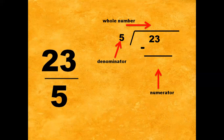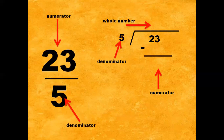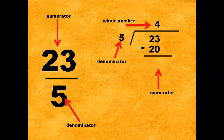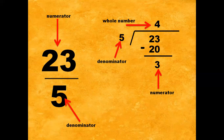Second example: 23 fifths. The numerator is 23 and the denominator is 5. Step 1: 23 divided by 5 gives us 4. 4 times 5 gives us 20. 23 minus 20 gives us 3. So the whole number is 4, the denominator is 5, and the new numerator is 3. The final answer is 4 and 3 fifths.